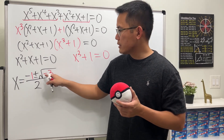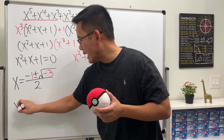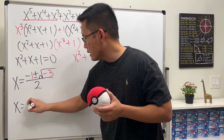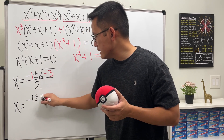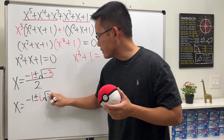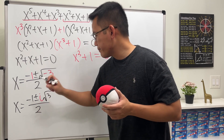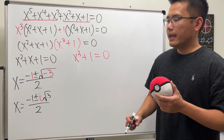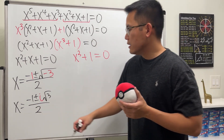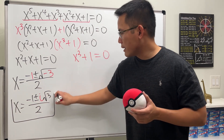All divided by two times one, which is just two. Since we have negative three under the square root, we pull out i, giving us x equals negative one plus or minus i times the square root of three, all over two.